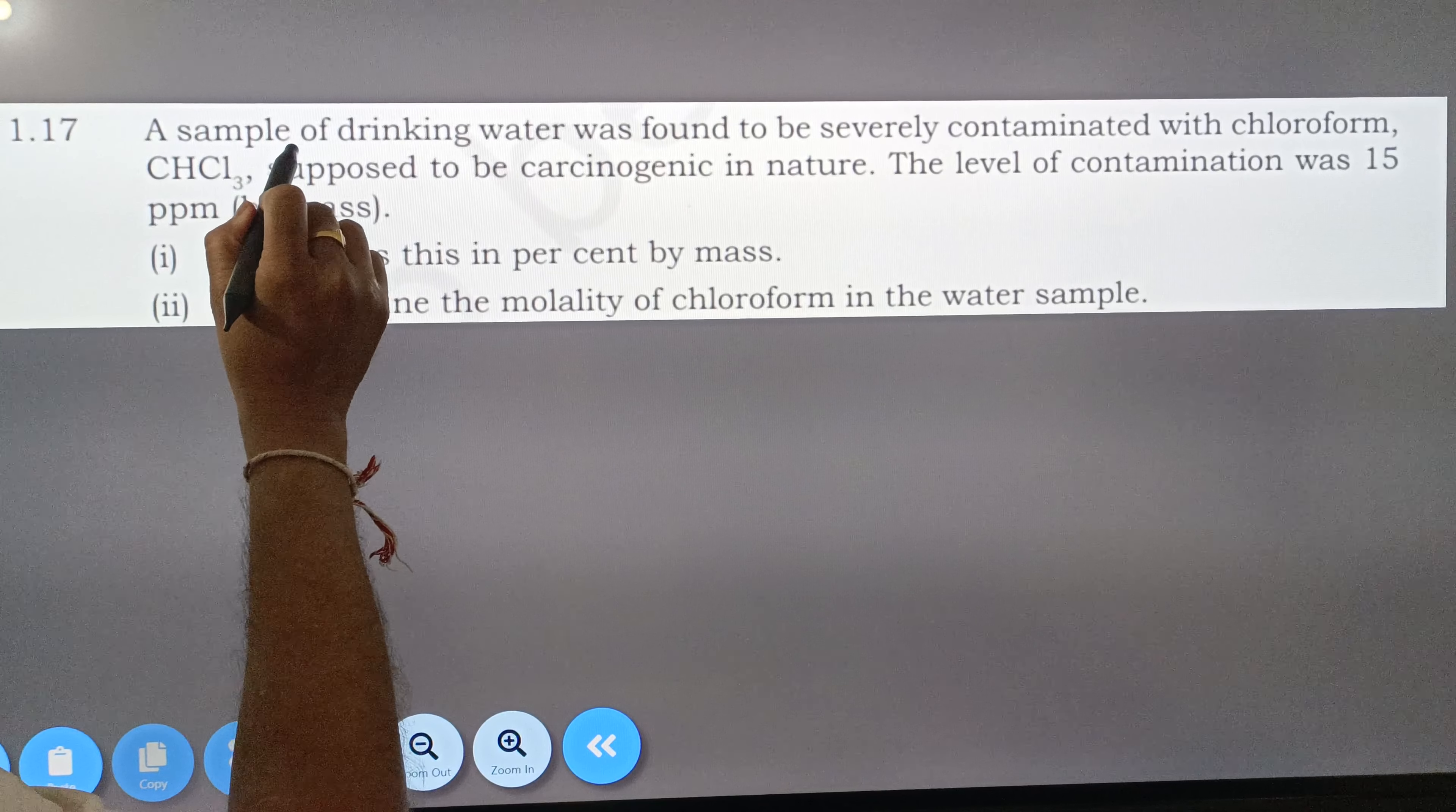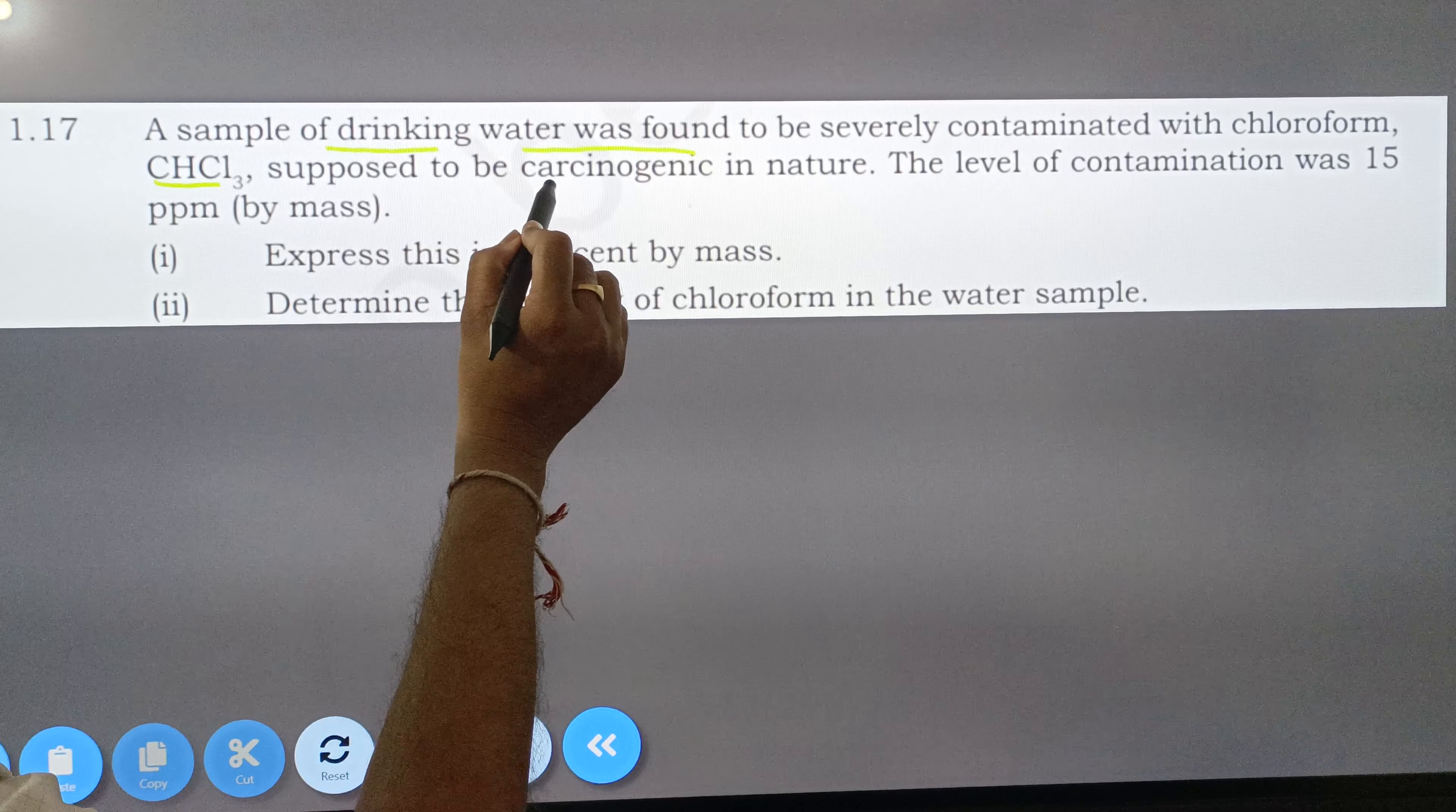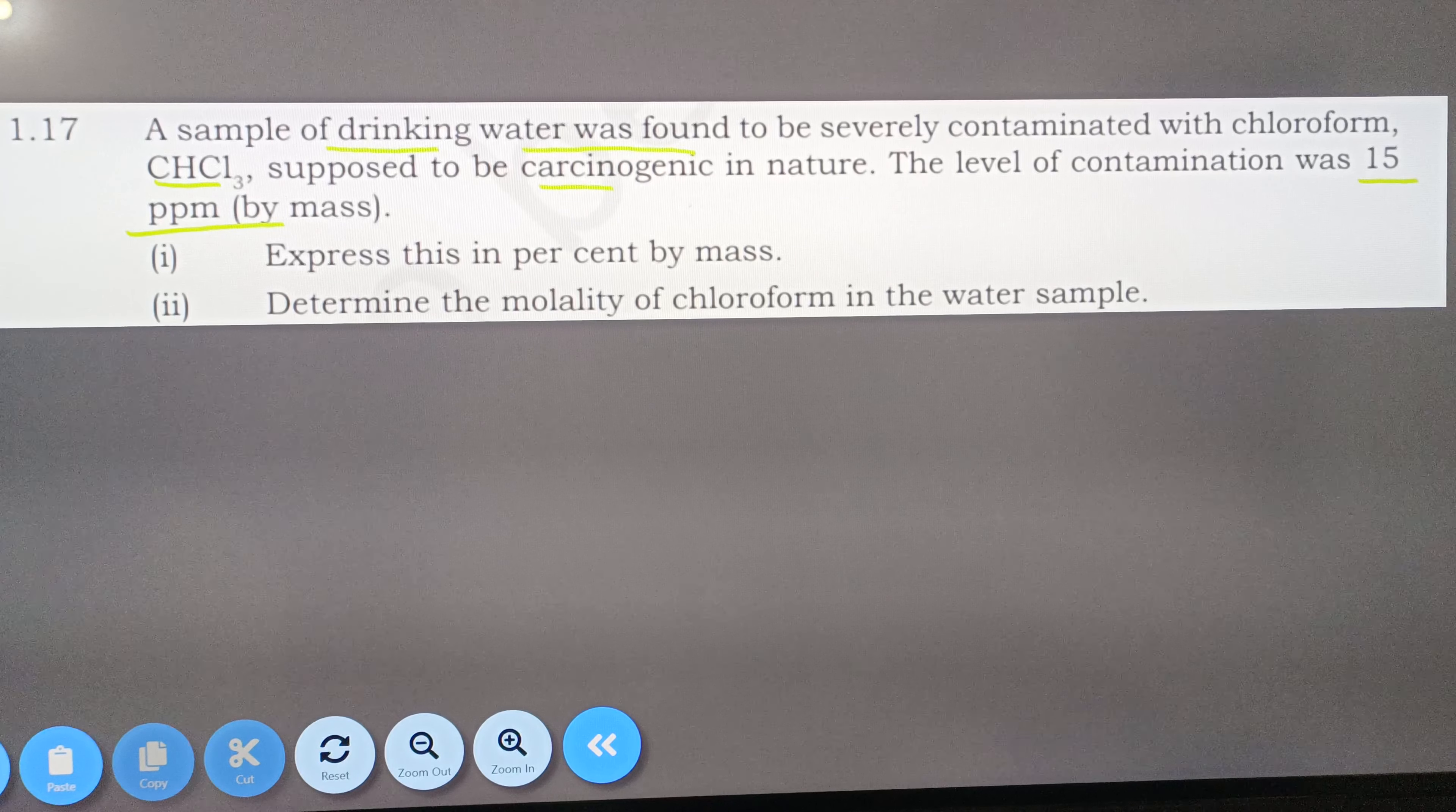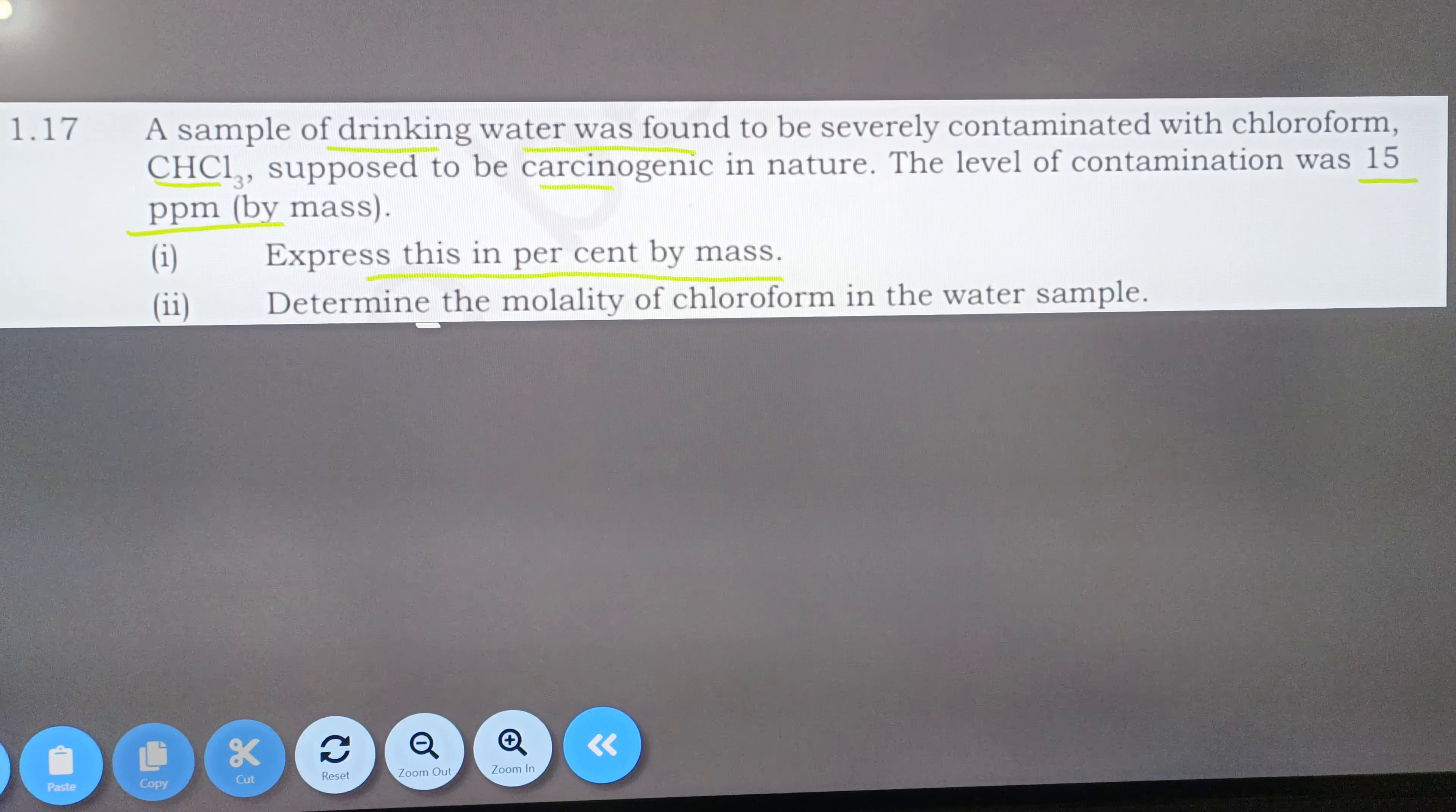A sample of drinking water was found to be severely contaminated with chloroform, CHCl3, supposed to be carcinogenic in nature. The level of contamination was 15 ppm by mass. You can express this in percent by mass and determine the molarity of chloroform in water.